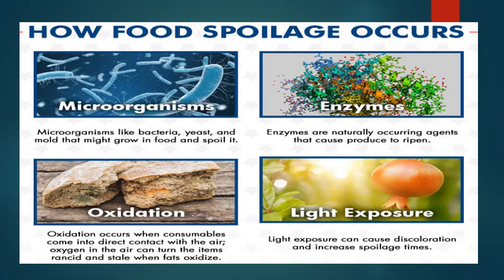Sometimes inherent enzymes in the food, if processing does not destroy them, can work and cause undesirable changes. Another important cause is oxidation, which can happen due to the presence of air or other oxidative reactions, producing oxidative products that have an undesirable effect on food quality. Light exposure also causes discoloration or can act as a pro-oxidant and cause oxidation. These are the major causes of spoilage of different kinds of food.